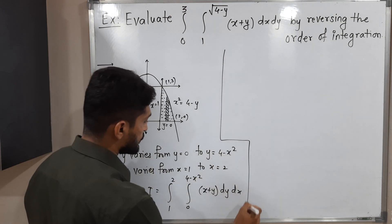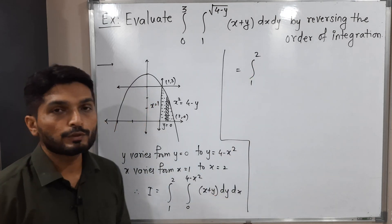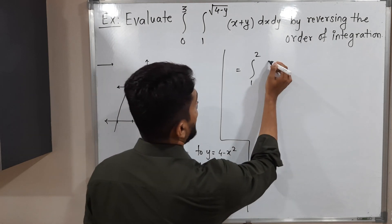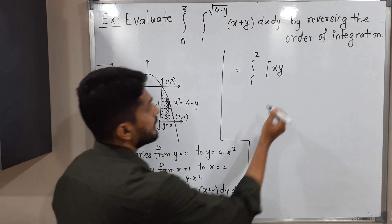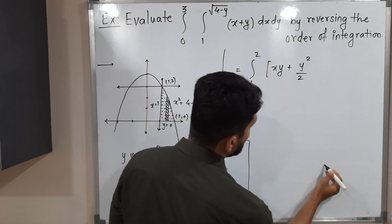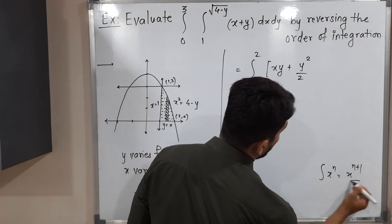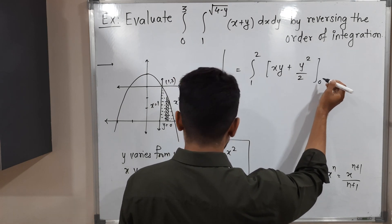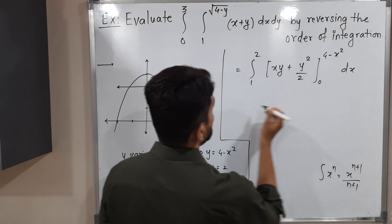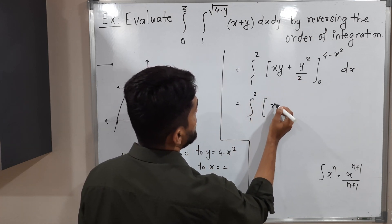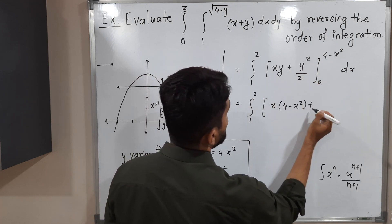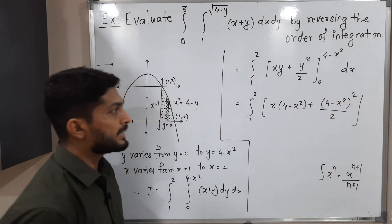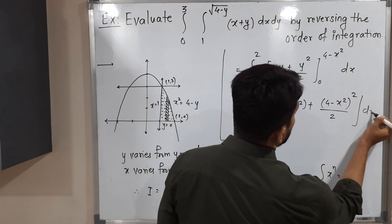Let us start to integrate. Finding the inner integral with respect to y: integration of x dy gives xy, and integration of y dy gives y squared over 2. Putting in limits 0 to 4 minus x squared and noting that the lower limit gives 0, we are left with the expression evaluated at the upper limit.